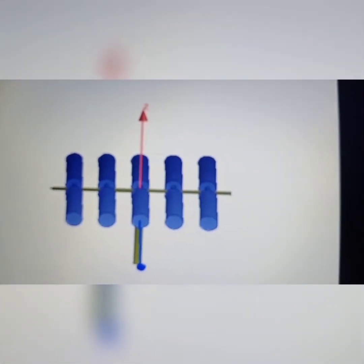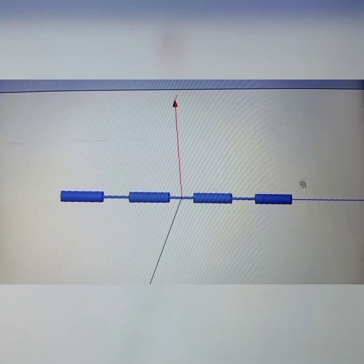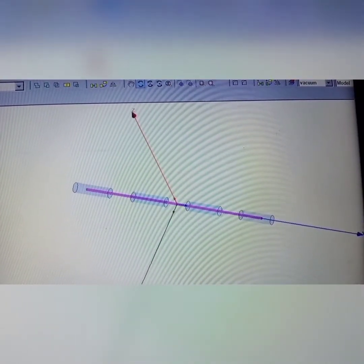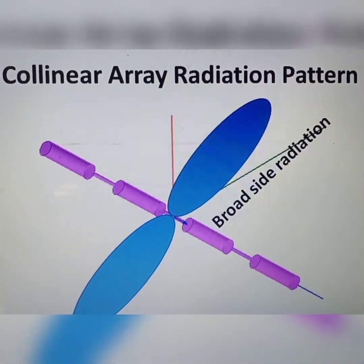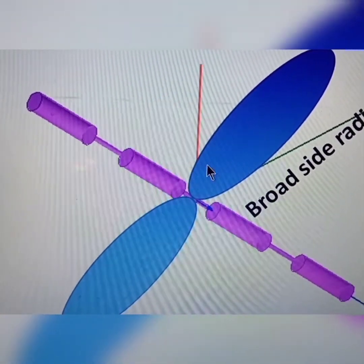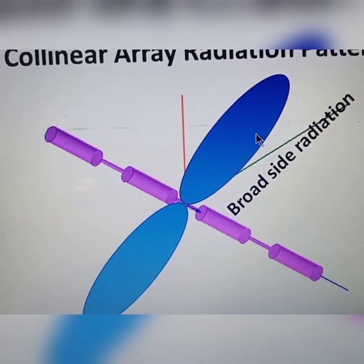Let us see one more type of array that is called collinear array. So in this, the arrangement is totally different. Here, all the elements, maybe four, six, whatever it is, depends on your n, are arranged one element above the other element in the same axis as I am showing here. So this is called collinear array. This is very useful and it can generate the broadside radiation like broadside array. As I shown different views, the radiation characteristics of this collinear array is like broadside and the main beam is perpendicular to the axis of this array. As you can see here, both sides or it is around the antenna.